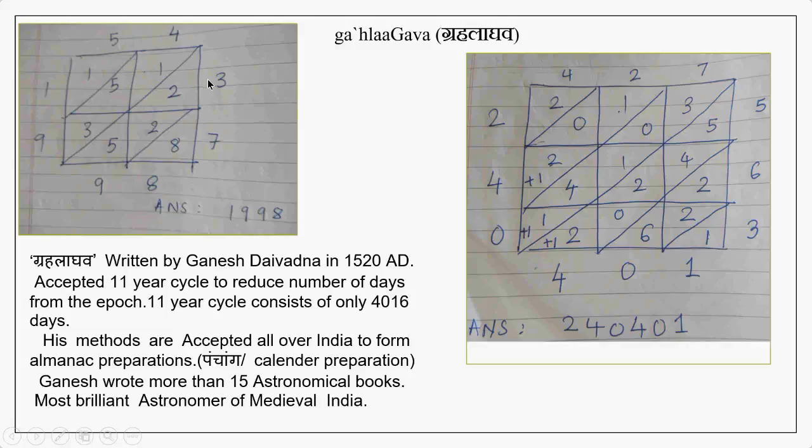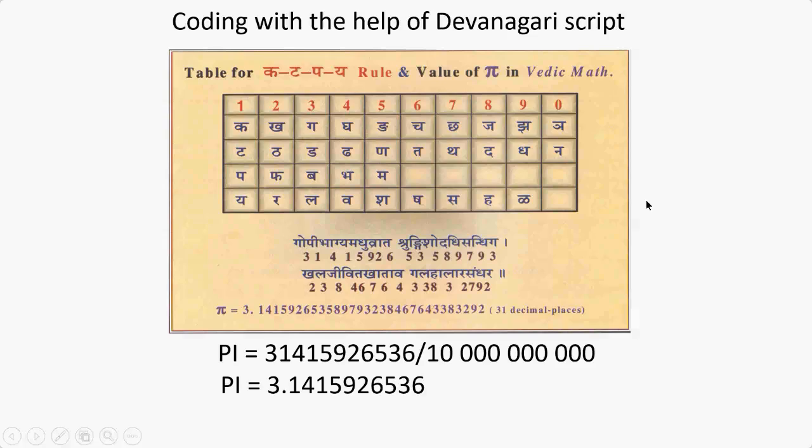See 54 times 37. So 5 times 3, 15. 4 times 3, 12. 7, 5s are 35. 7, 4s are 28. And you just add diagonally, you get the answer 198. This is the beautiful method discovered by Ganesh Daivadnya. He was an astronomer and he gave the calendar of eclipses. He accepted the 11 year cycle of sun and made his own almanac preparation. His almanac was still in use till recently. He has written 15 astronomical books and is considered the most brilliant astronomer of medieval India. Similarly, I have done another example, 427 multiplied by 563, and you can do this way if you want.